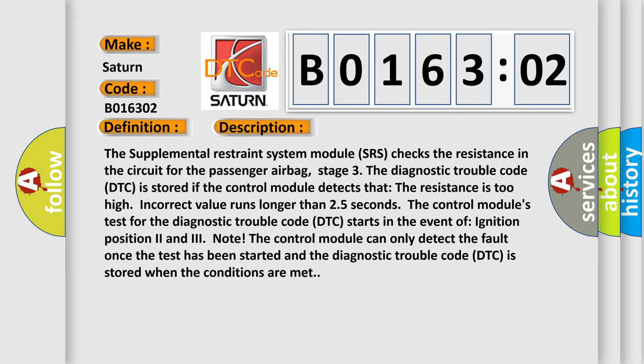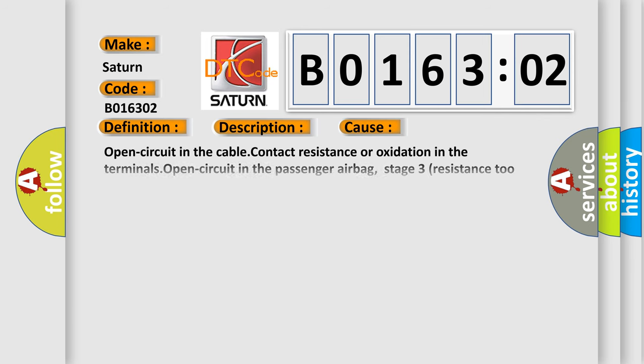The Supplemental Restraint System Module (SRS) checks the resistance in the circuit for the passenger airbag Stage 3. The Diagnostic Trouble Code (DTC) is stored if the control module detects that the resistance is too high. The incorrect value runs longer than 25 seconds. The control module's test for the Diagnostic Trouble Code (DTC) starts in the event of ignition position 2 and 3. Note: The control module can only detect the fault once the test has been started and the Diagnostic Trouble Code (DTC) is stored when the conditions are met.